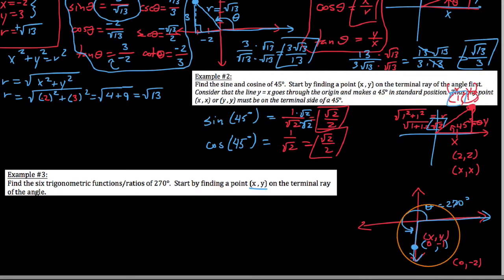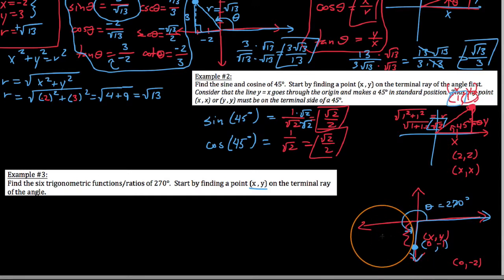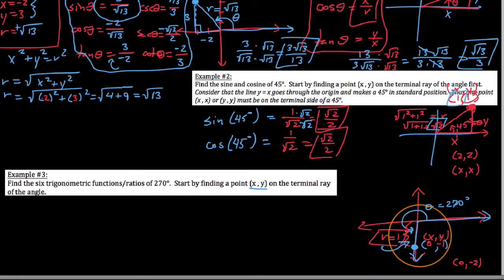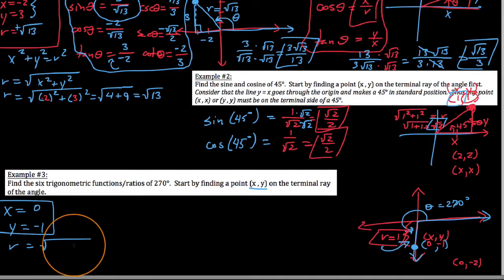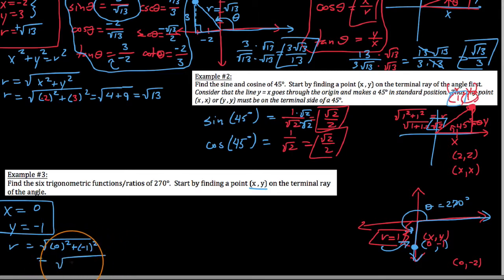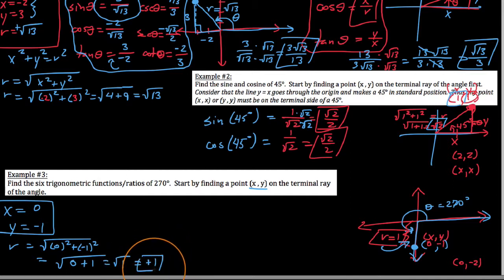And r is, by definition, the distance from this point back to the origin. So r is the distance right here, and in this case r is 1 because it is intuitively obvious that this is 1 away from the origin. So here's what we've got: x, y, r. We've got a point on the terminal side — x value is 0, y value is negative 1. And r would be the square root of 0 squared plus negative 1 squared, which is the square root of 0 plus 1, which is the square root of 1, which is 1 — keeping the positive value.